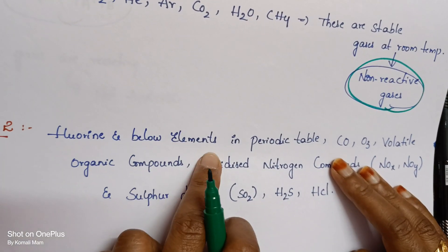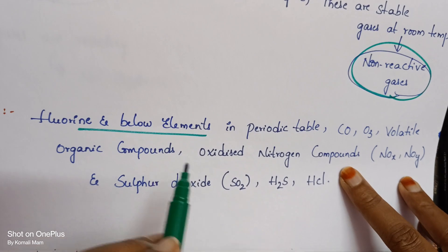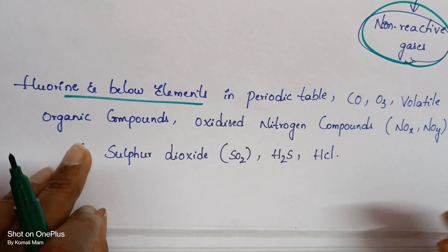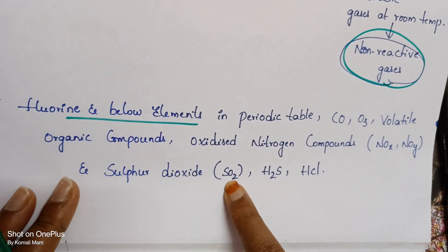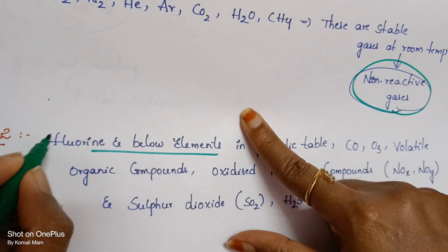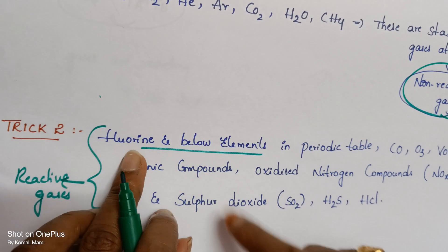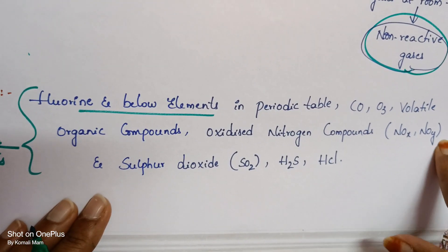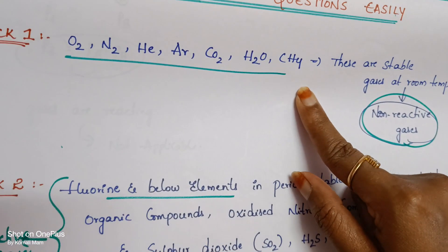Fluorine and below elements like chlorine are reactive. Also reactive are CO, O3, volatile organic compounds, oxidized nitrogen compounds like benzene and toluene, NO, NO2, SO2, H2S, and HCl — these are reactive gases. If any of these are present — fluorine, chlorine, CO, O3, volatile organic compounds, NO, NO2, SO2, H2S, HCl — you have to memorize both lists.